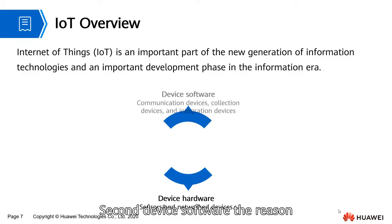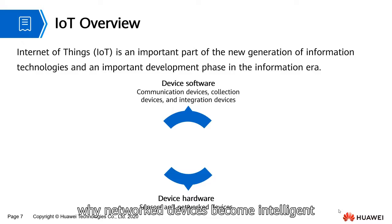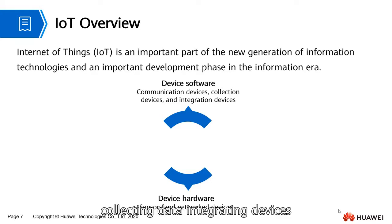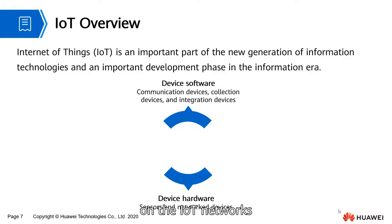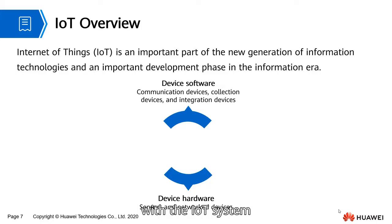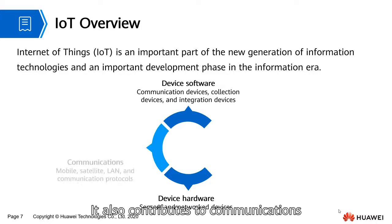Second, device software — the reason why networked devices become intelligent. Software is responsible for communicating with the cloud, collecting data, integrating devices, and performing real-time data analysis on IoT networks. In addition, device software can visualize users' data and allow devices to interact with the IoT system. It also contributes to communications.